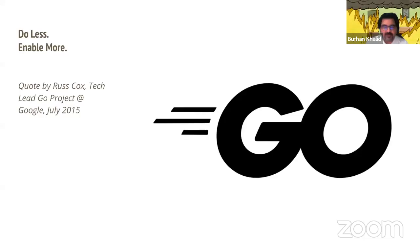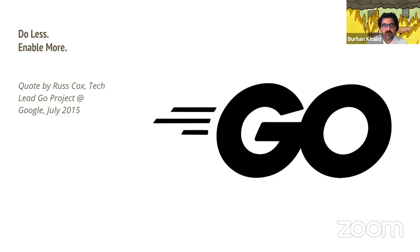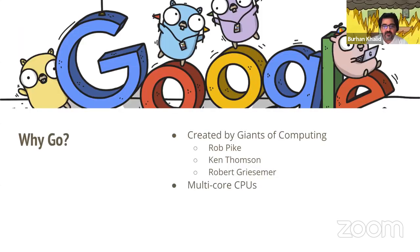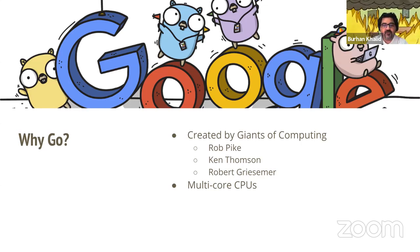Go is a programming language developed at Google. The motto for Go is 'do less and enable more.' So why should you learn Go? First of all, it was created at Google by what I like to call the giants of computing — people that had a great influence on computer technology as a whole.